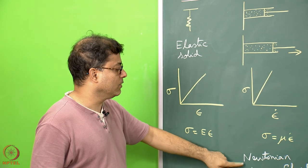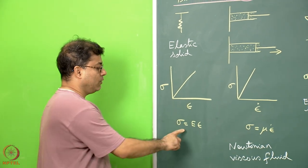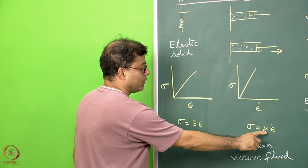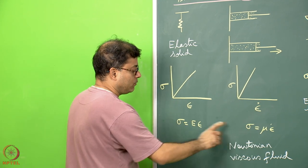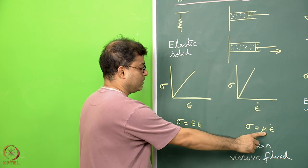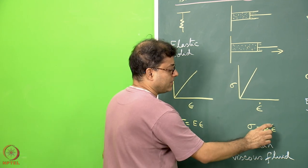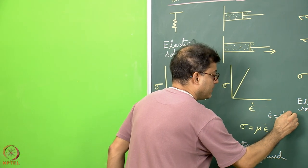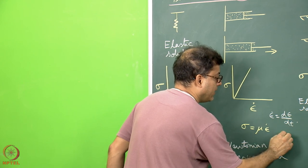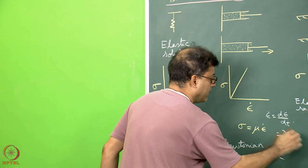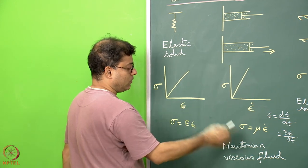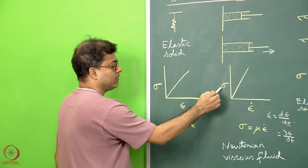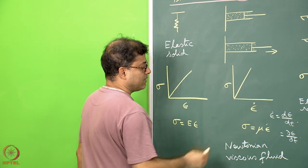Now we look at the behavior of a Newtonian viscous fluid. What is the difference from the elastic solid rheological model? Here, stress equals the proportionality constant — which we call dynamic viscosity, or simply viscosity — multiplied by strain rate. Epsilon dot indicates strain rate, written as d epsilon/dt. So instead of epsilon, for Newtonian viscous fluids we plot epsilon dot along the x-axis and sigma (applied stress) along the y-axis, and a straight-line behavior is found.